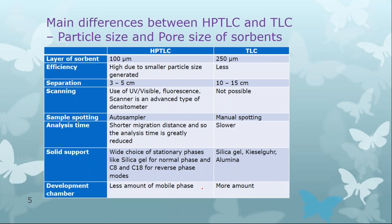Regarding the development chamber, less mobile phase is required in HPTLC because the length of travel is smaller and the plate sizes are smaller. In TLC, the plates are larger because separation requires a longer distance of travel, and therefore more mobile phase is required.